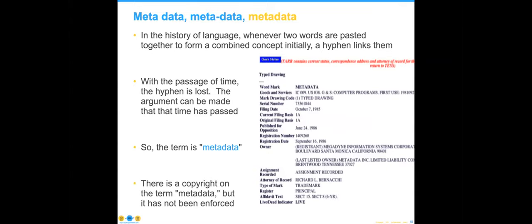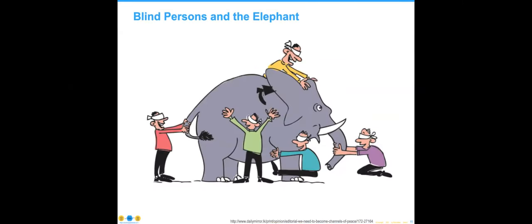Let's dive right in. We start out with defining metadata. In the history of language, when two words were pasted together to form an initial concept, we started out with a hyphen — even DAMA is hyphenated. Over time, the hyphen can be lost and we should use the word metadata. Anything relevant that's happening is happening with the term metadata. There was also a copyright granted by the U.S. government to somebody on the term metadata — kind of like the joke that Microsoft owns all the zeros and ones — but that has been thoroughly discredited.